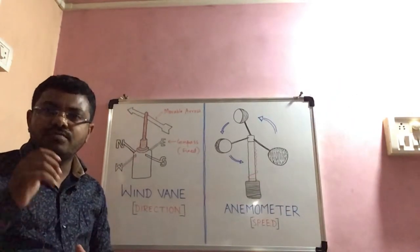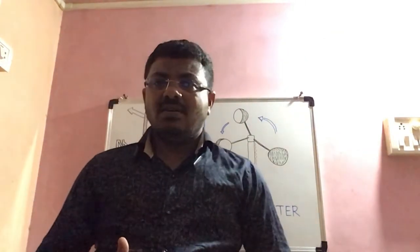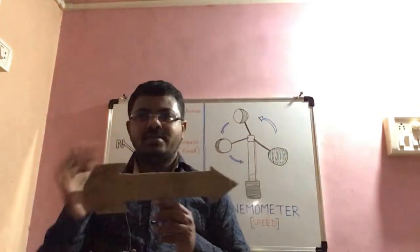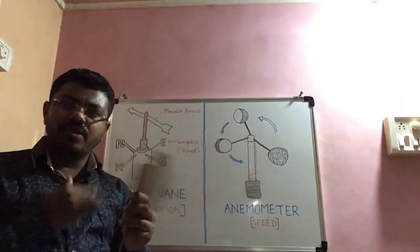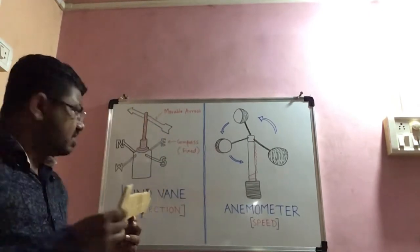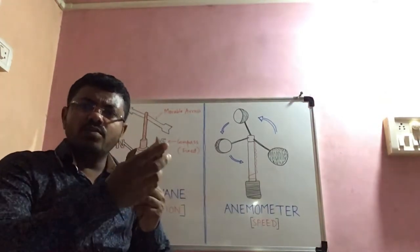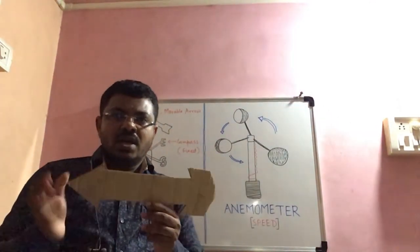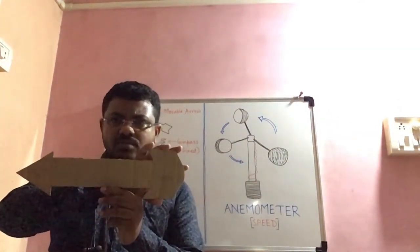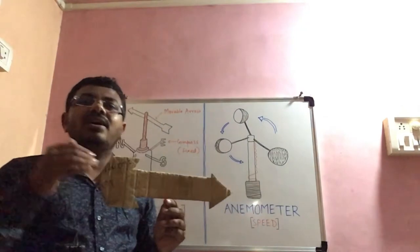This arrow is movable. The arrow will show us from which direction the wind is blowing. The arrow is fixed on the shaft, and the direction from which the wind is blowing — this arrow will be pointed towards that direction. The second part of the arrow, this portion, will be in the opposite direction.